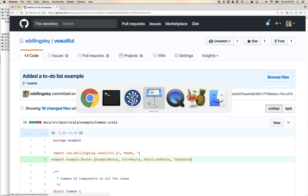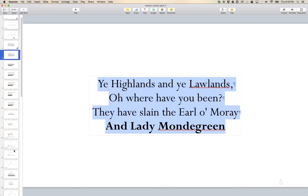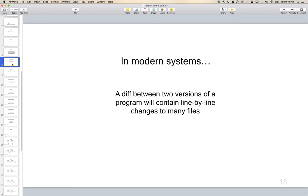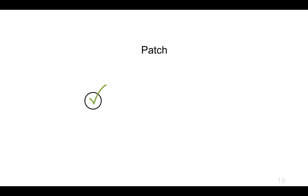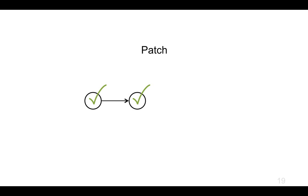To summarize: in modern systems, a diff between two versions of a program contains line-by-line changes to many files. A snapshot contains a working directory with a whole bunch of files, but we can still send a patch that describes changes to many files and apply that patch to create a new snapshot from it.